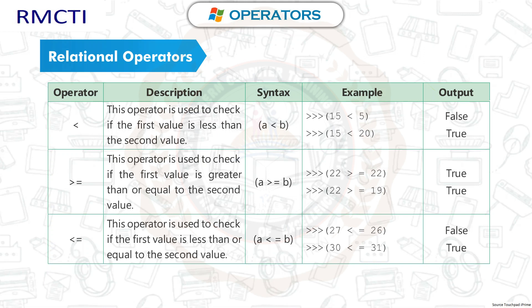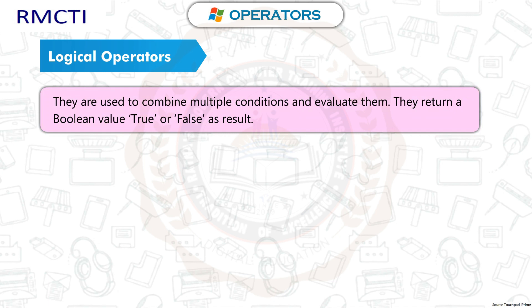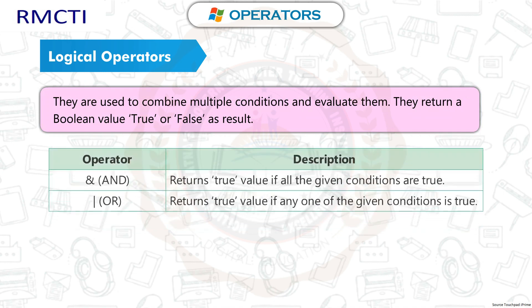The <= operator checks if the first value is less than or equal to the second. For example, 27 <= 26 returns False, and 30 <= 31 returns True. Logical operators: They are used to combine multiple conditions and evaluate them. They return a boolean value — True or False — as a result. The 'and' operator returns True if all conditions are true; the 'or' operator returns True if any one condition is true.